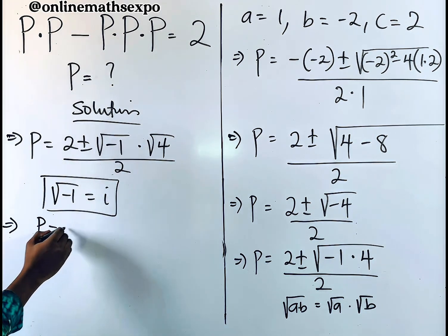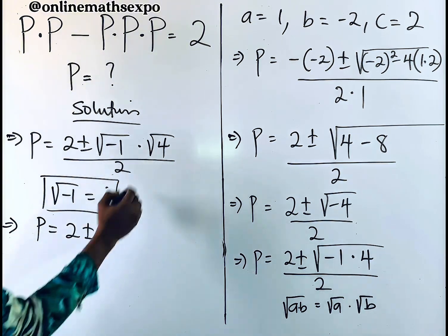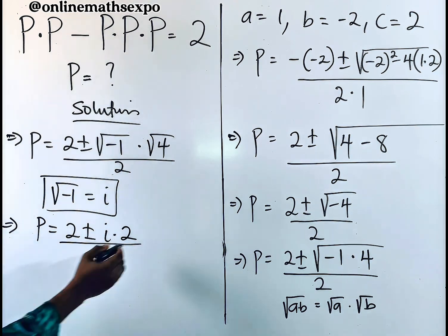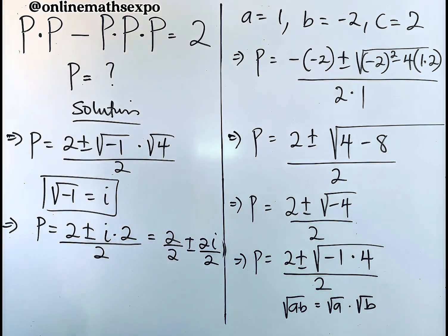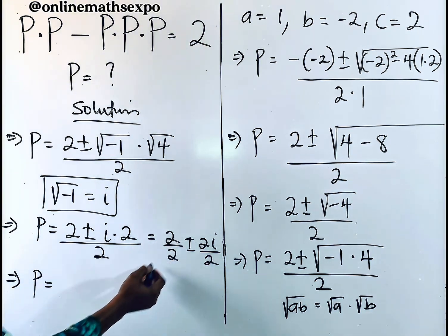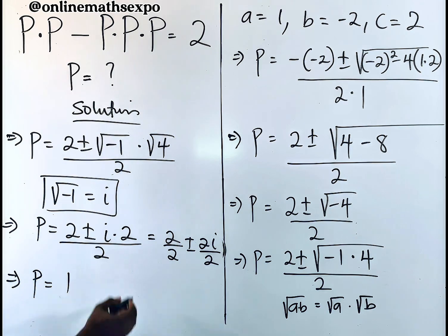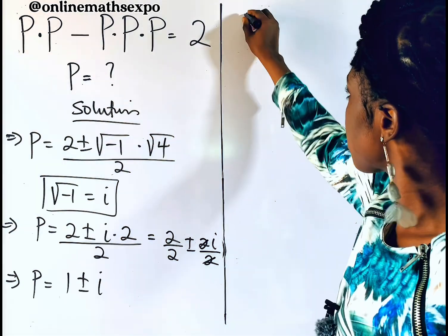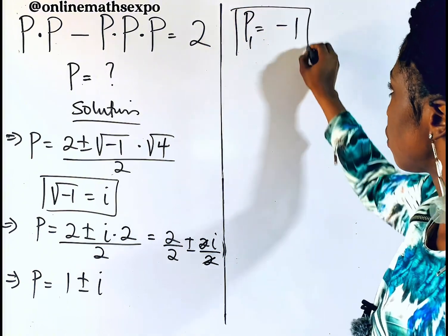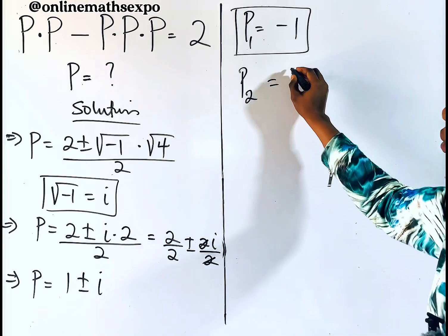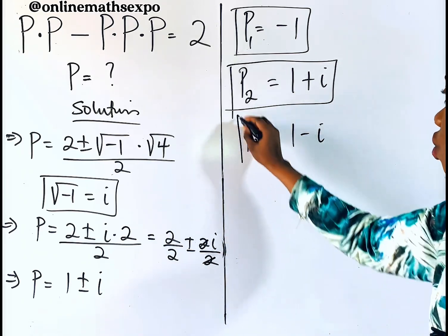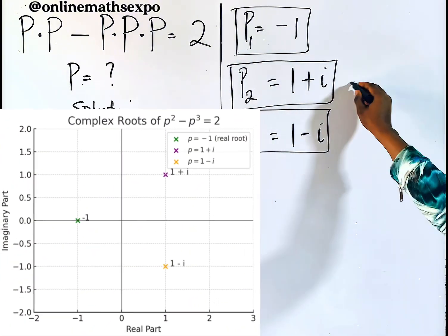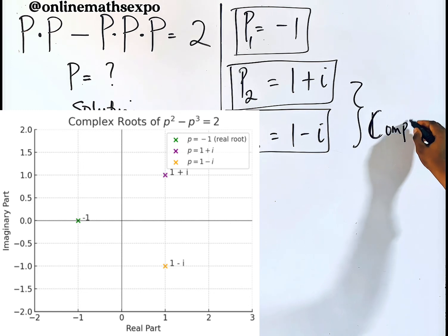So p = (2 ± 2i) / 2, which simplifies to 2/2 ± 2i/2 = 1 ± i. Therefore the three solutions are: p = −1 (the real solution), p = 1 + i, and p = 1 − i.